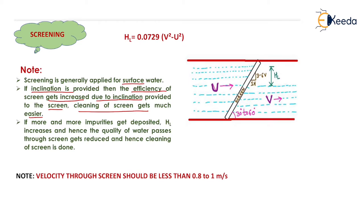What will happen if more and more impurity comes into the water and chokes the screen? The level of water before the screen will increase, and after the screen, the level of water will decrease. The head loss value will keep increasing. As more impurity deposits, head loss (HL) increases, which means the quality of water passing through the screen gets reduced, and hence cleaning of the screen is done. HL will indicate that the cleaning time has been reached, and we need to clean the screen before using it for further purification.